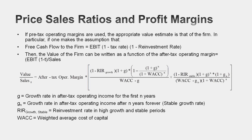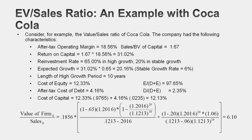Now that we've seen price-to-sales ratios are a function of net profit margin as the companion variable, let's move to enterprise value-to-sales ratios. The EV-to-sales ratio is also a function of four variables: cost of capital, expected growth rate, reinvestment rate, and operating margin. Compare these to the price-to-sales drivers: cost of equity becomes cost of capital, growth in equity earnings becomes growth in operating income, payout ratio becomes reinvestment rate, and net margin becomes operating margin. You can make this a two-stage, three-stage, or ten-stage model — the variables don't change. The companion variable for EV-to-sales is your pre-tax or after-tax operating margin.